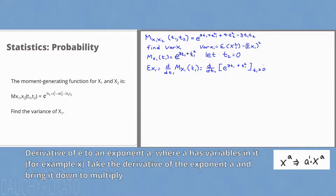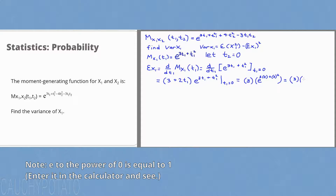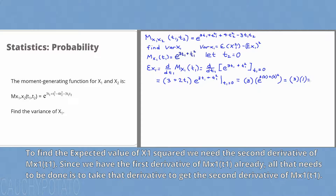To get the derivative of e with an exponent, take the derivative of the exponent and multiply it with e to the unchanged exponent. The derivative of e to the 3t1 plus t1 squared is (3 plus 2t1) times e to the 3t1 plus t1 squared. Plugging in t1 equals 0 gives 3 times e to the 0, which equals 3 times 1 equals 3. So the expected value of x1 is 3.